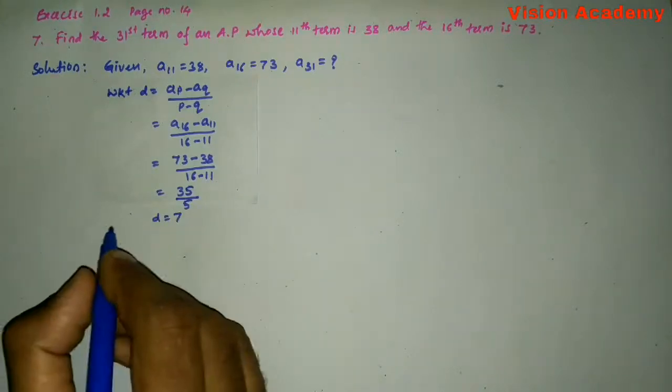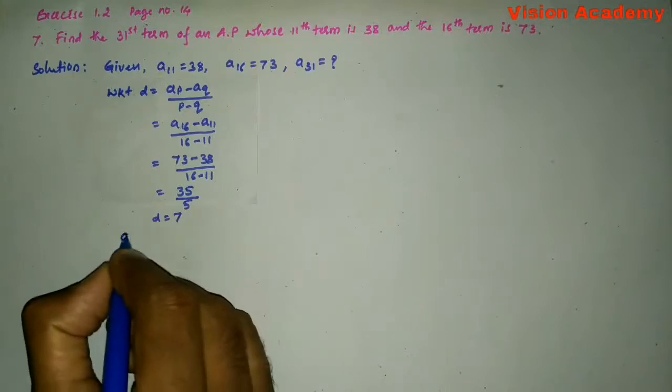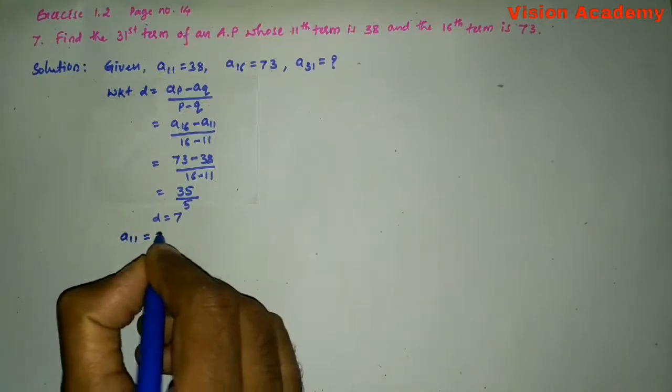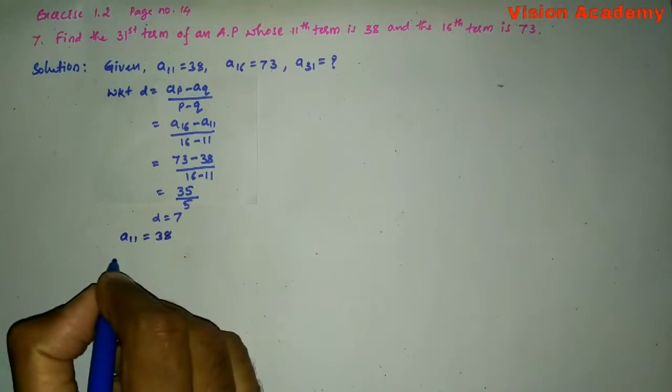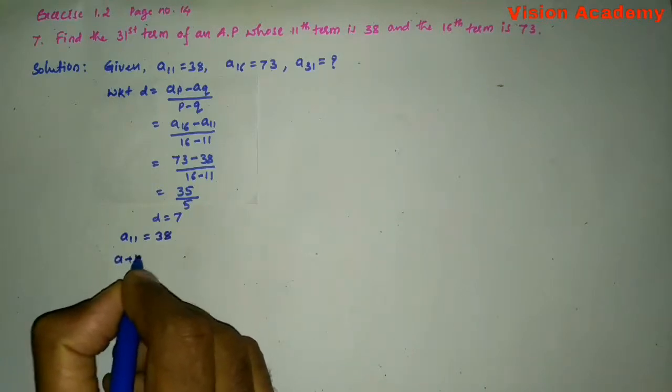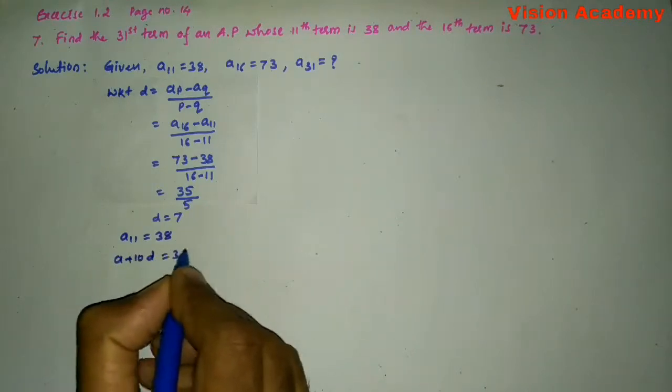Now, let us consider A11 is equal to 38. A11 can also be written as A plus 10D is equal to 38.